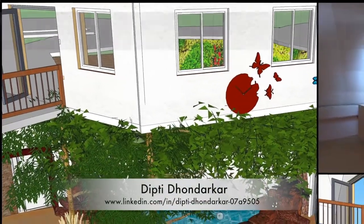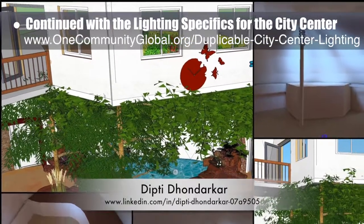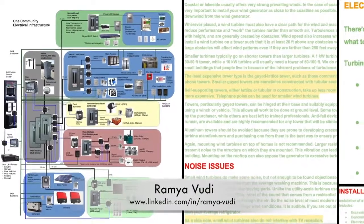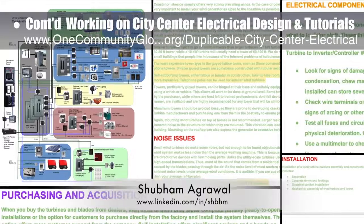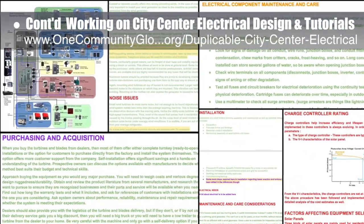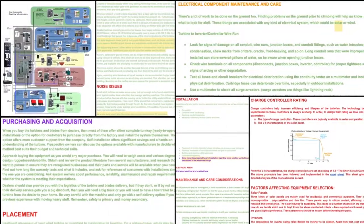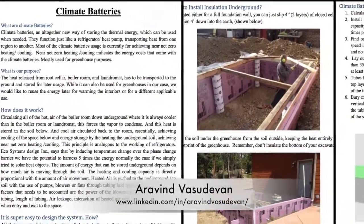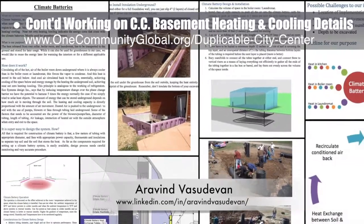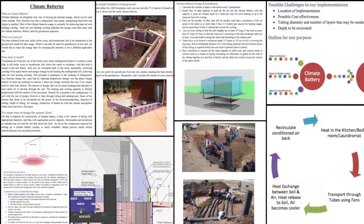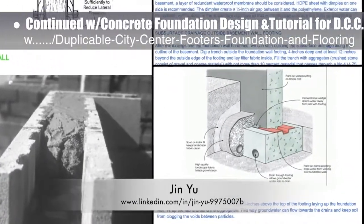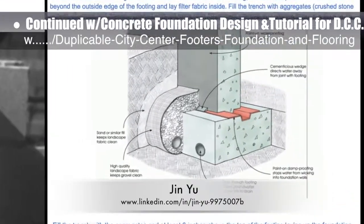Deepthi Dandarkar, electrical engineer, continued with her 38th week of work on the lighting specifics for the city center — this week's focus was continued modeling and initial lighting testing within the Social Dome. Rami Voodi and Shubham Agrawal, electrical engineers, continued their work on the city center electrical design and tutorials with Mike Hogan, automation systems developer and business systems consultant. What you see here are pictures of the updated electrical overview and Rami and Shubham's PV solar microgrid and wind power tutorials developing behind the scenes. Aravind Vasudevan, VA in mechanical engineering, continued his work on the city center basement heating and cooling details — this week's focus was researching how a climate battery works and can be included in our designs. Jin Yu, structural engineering designer, completed her 16th week working on the city center footers, foundation, and flooring tutorial — this week's focus was adding more content for the moisture control and center block wall sections.